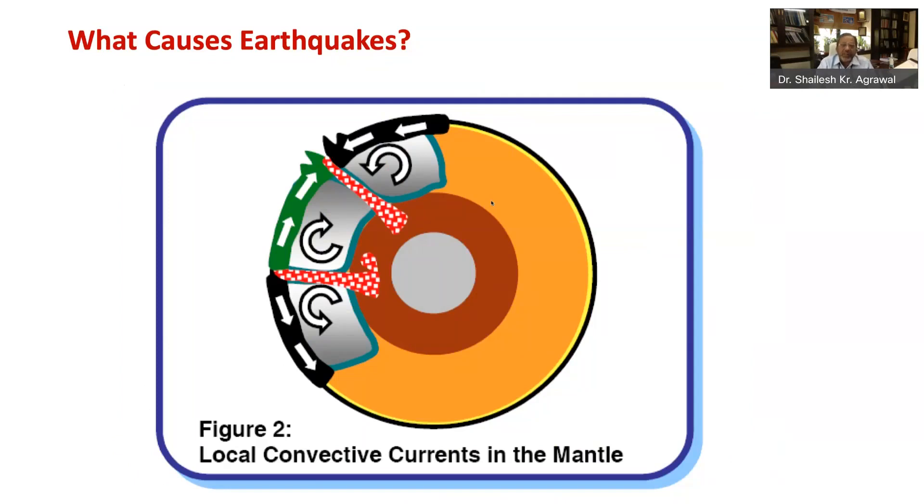The mantle, which is in liquid form, develops convection currents, and this results in circulation of Earth mass. Hot molten lava comes out and cold rock mass goes inside. Many such local circulations take place in different regions of the Earth's surface, leading to constant movement of different portions of the Earth in different directions along the surface.